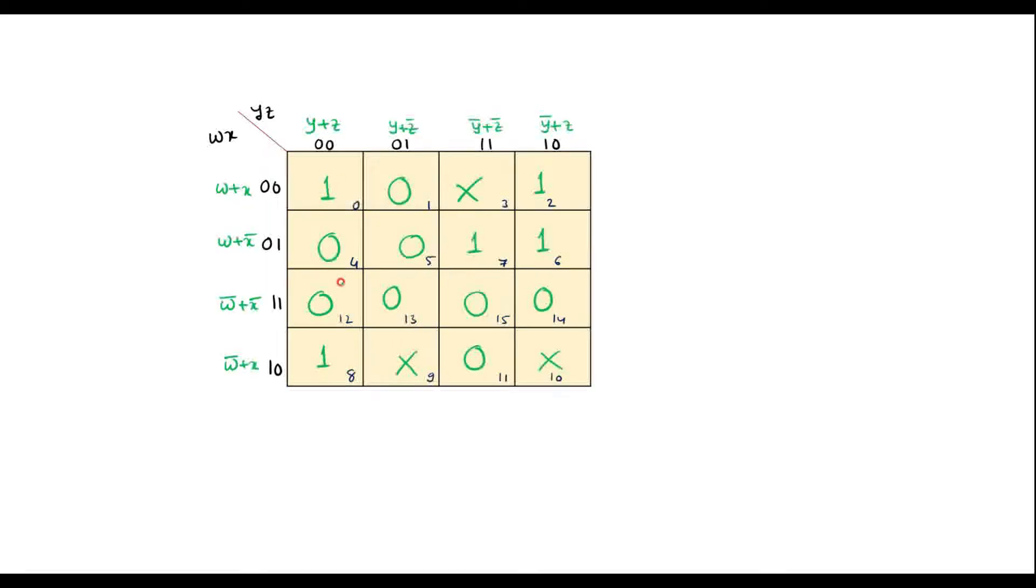So here, the given terms are max terms. We have to do the grouping of zeros. So here, this 0, 0, 0, 0, I can make one quad.